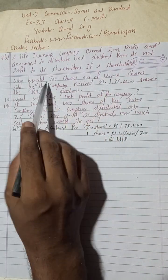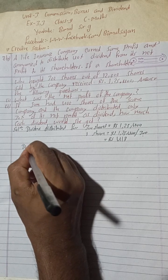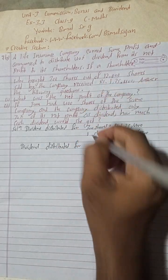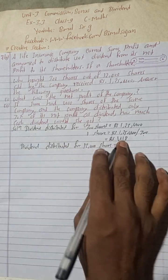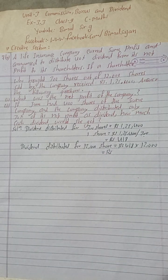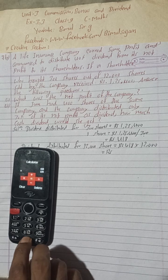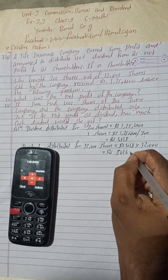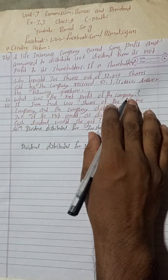Now, the total company shares were 12,000. So dividend distributed for 12,000 shares is Rs 418 multiplied by 12,000. Calculating: 418 × 12,000 — working through: 418 × 12 = 5,016, then × 1,000 = 50,16,000. So the total dividend distributed is Rs 50,16,000.